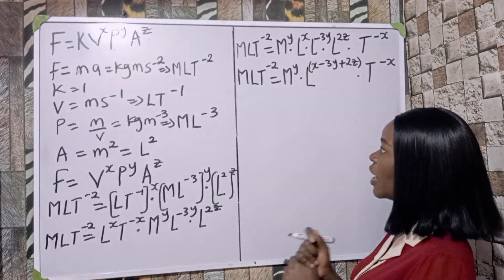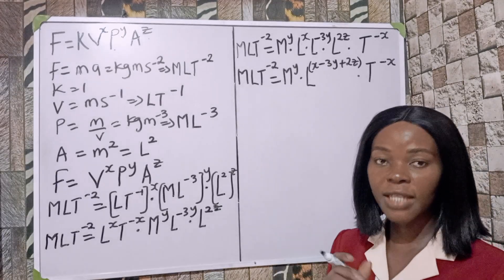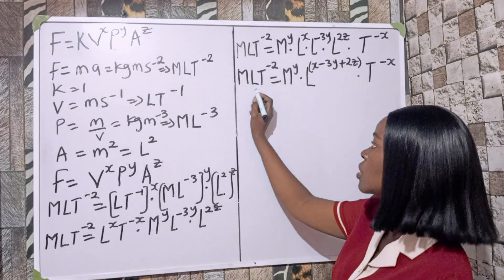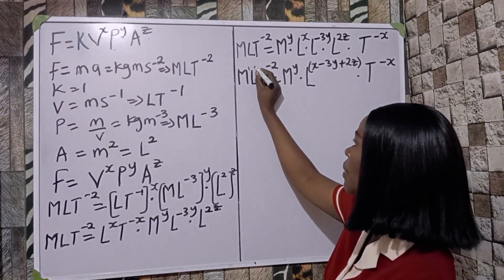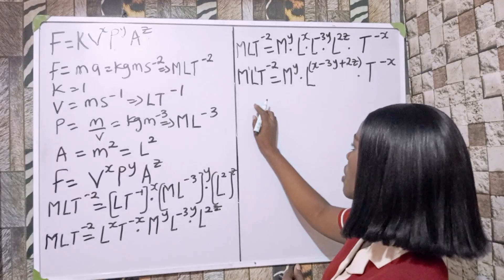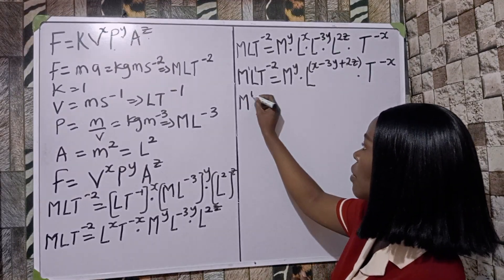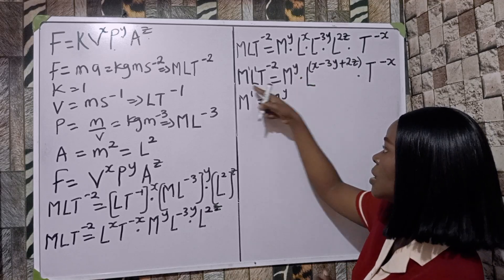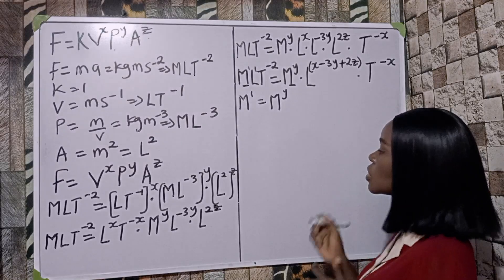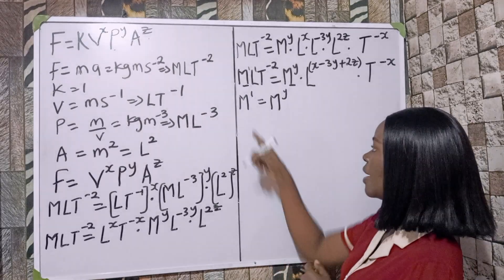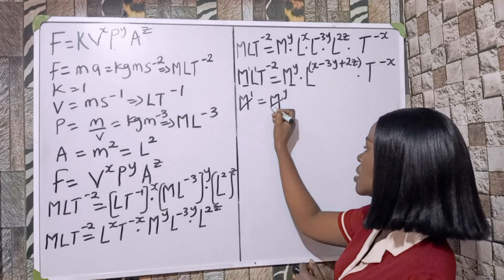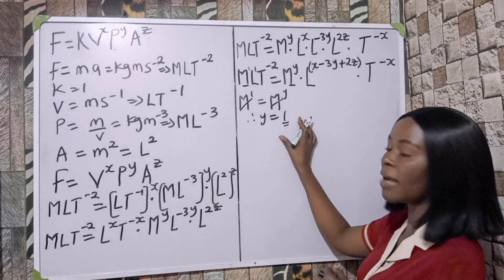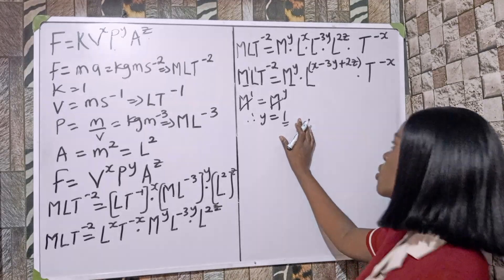Starting with M: the power of M on the left is one. Equating gives M¹ equals M^y, so since the bases are the same, y equals one. We have found y equals 1.